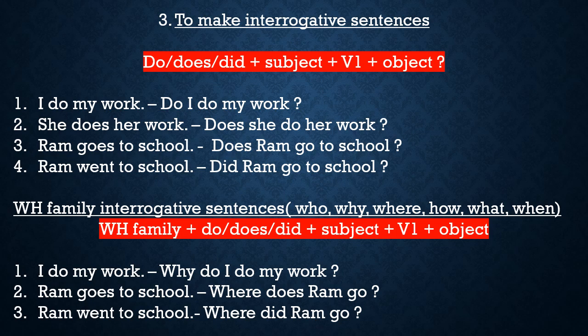Here does is the helping verb, and do after the subject is the main verb. 'Ram goes to school' — 'Does Ram go to school?' — kya Ram school jaata hai? 'Ram went to school' — 'Did Ram go to school?' — kya Ram school gaya? Did is used here because went is in past tense. This is why did is used.